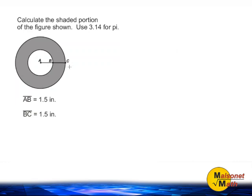In this problem we are asked to calculate the shaded portion of the figure shown using 3.14 for Pi. To find the solution, we need to figure out the area of the larger circle and the area of the smaller circle in the middle, and then subtract those two areas together. What we have remaining is the area of the shaded portion on the outside.